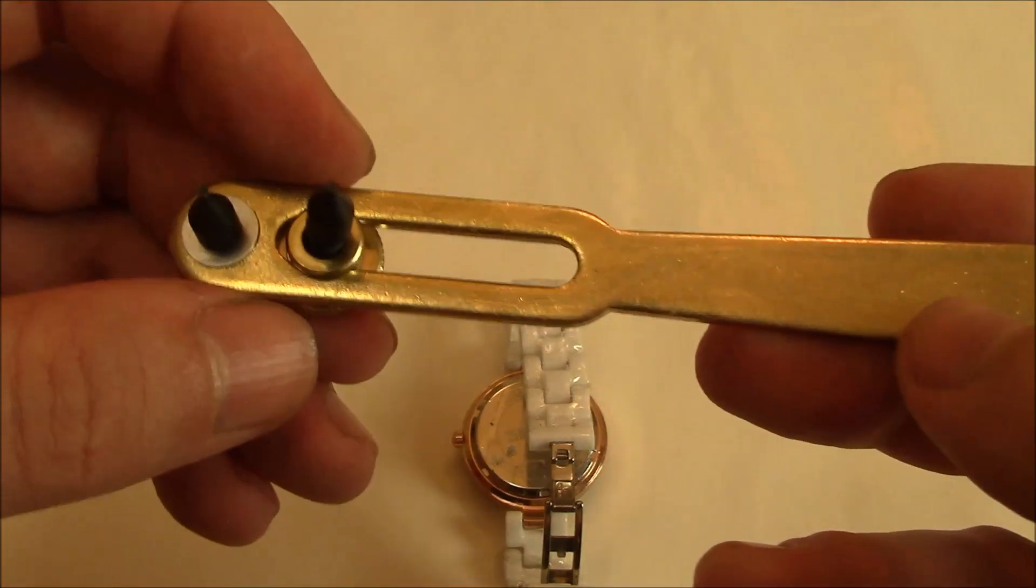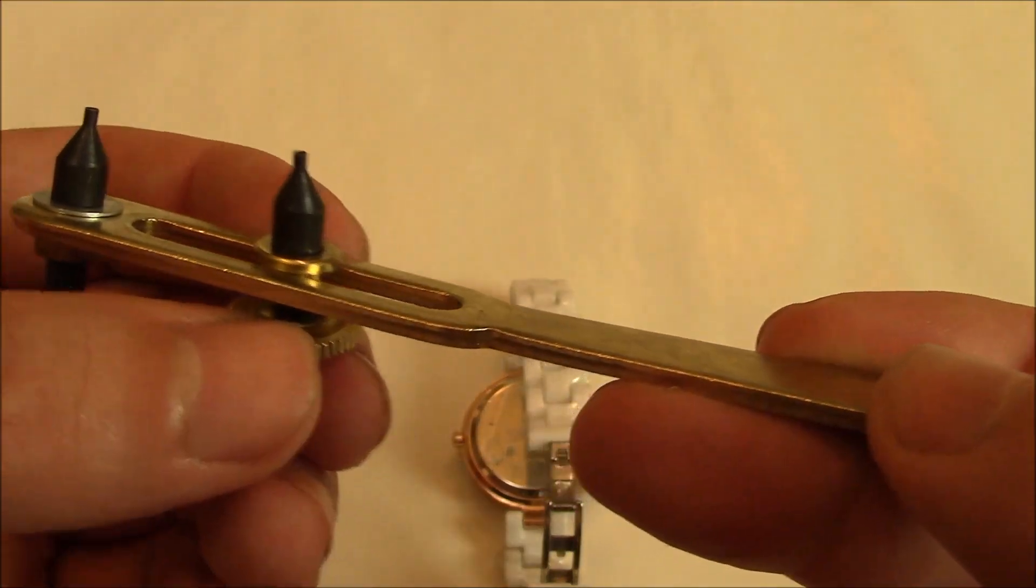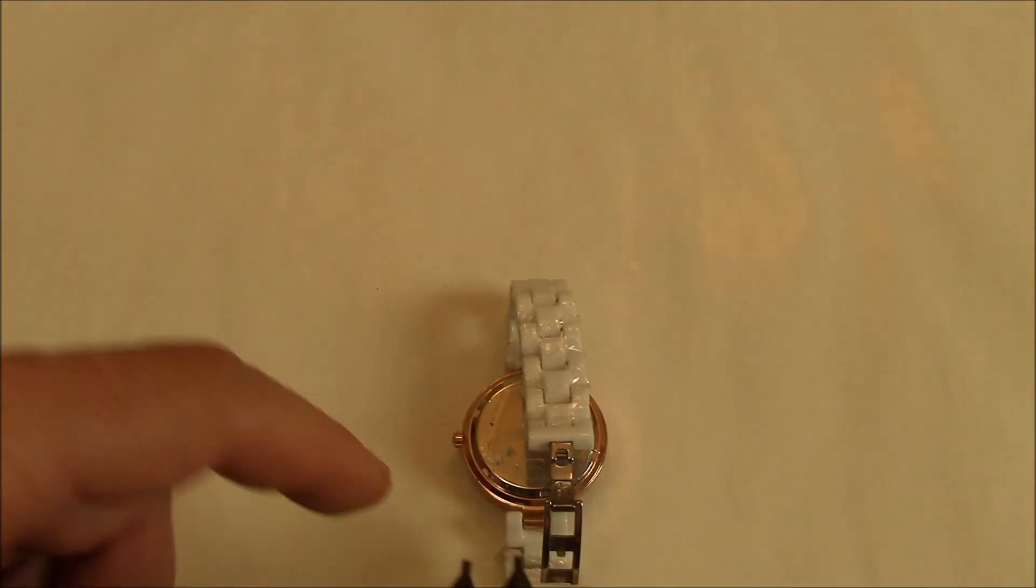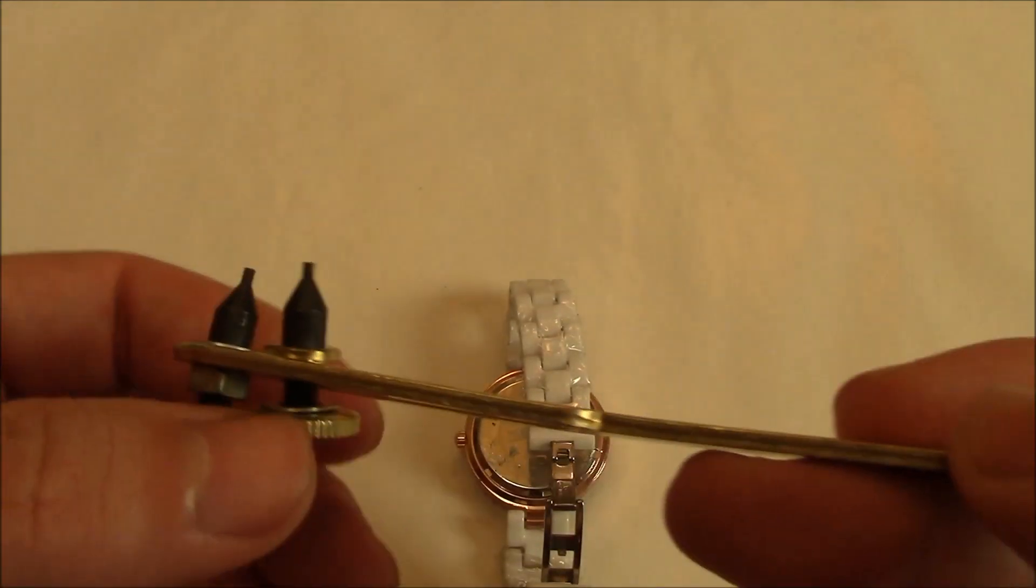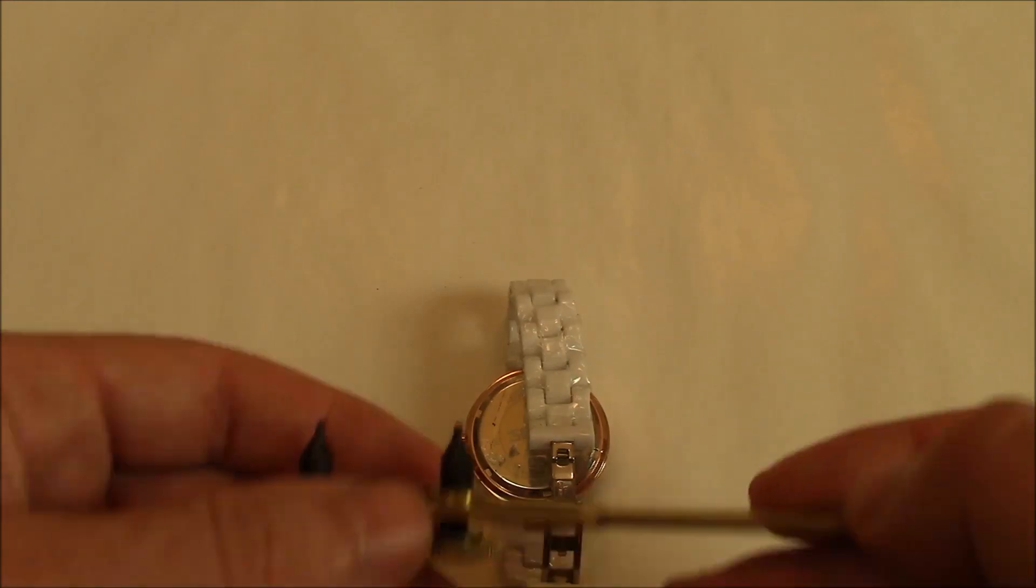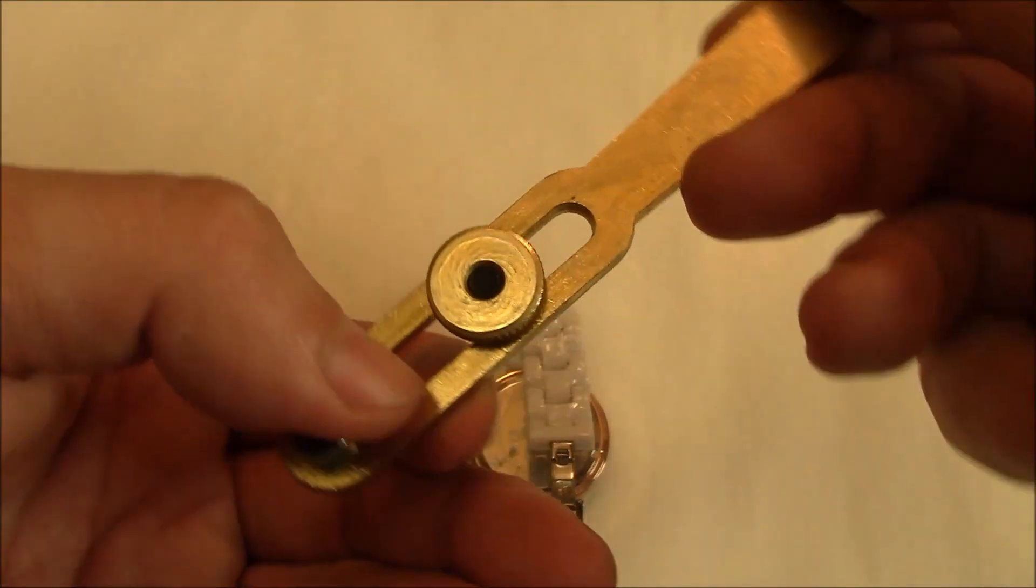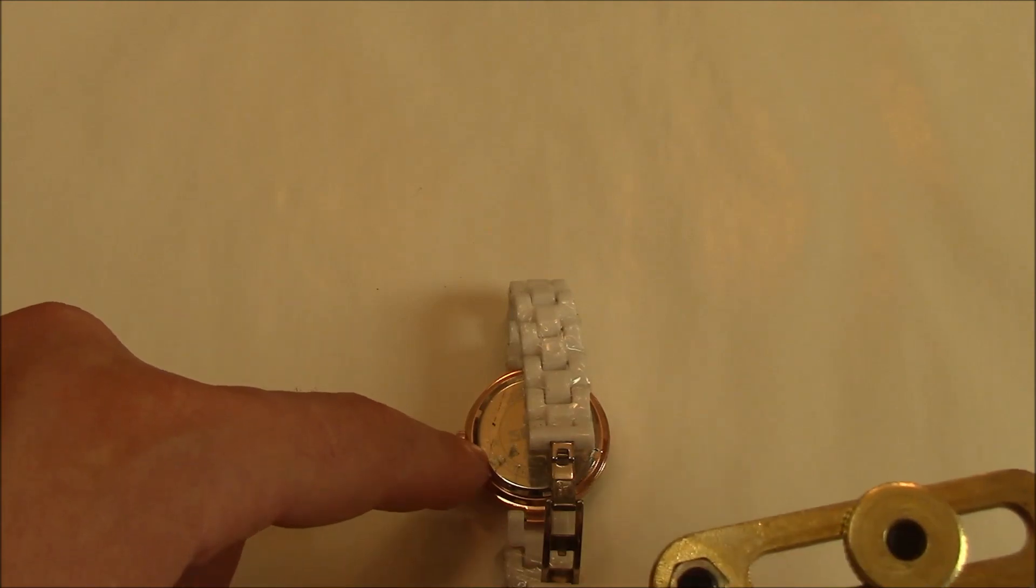Now, this is the tool I'm going to be using. As you can see, it's universal. One side grips onto one of these notches right here, and then the other side grips onto another notch. Then you can just basically turn it counterclockwise and remove the cover.